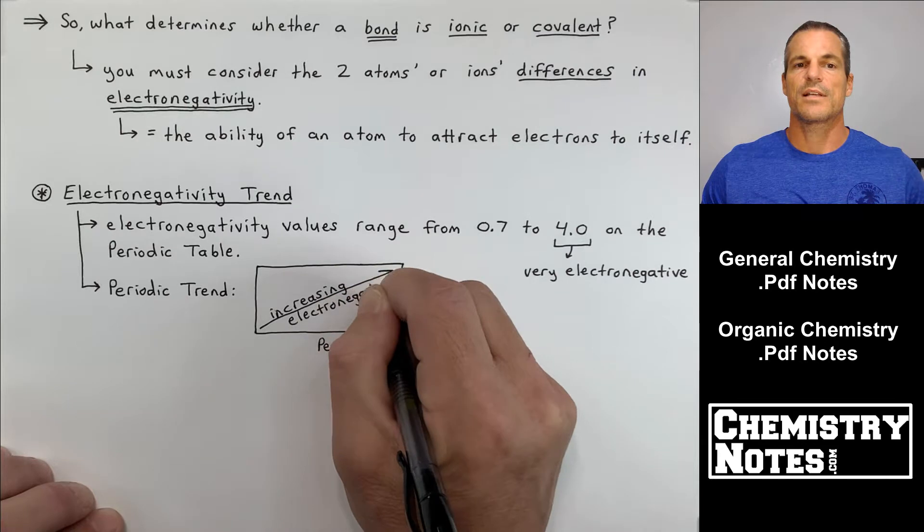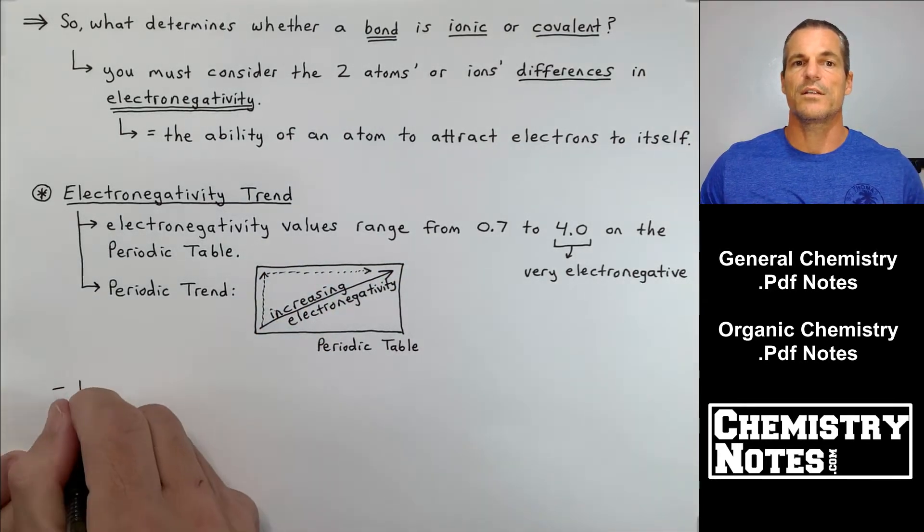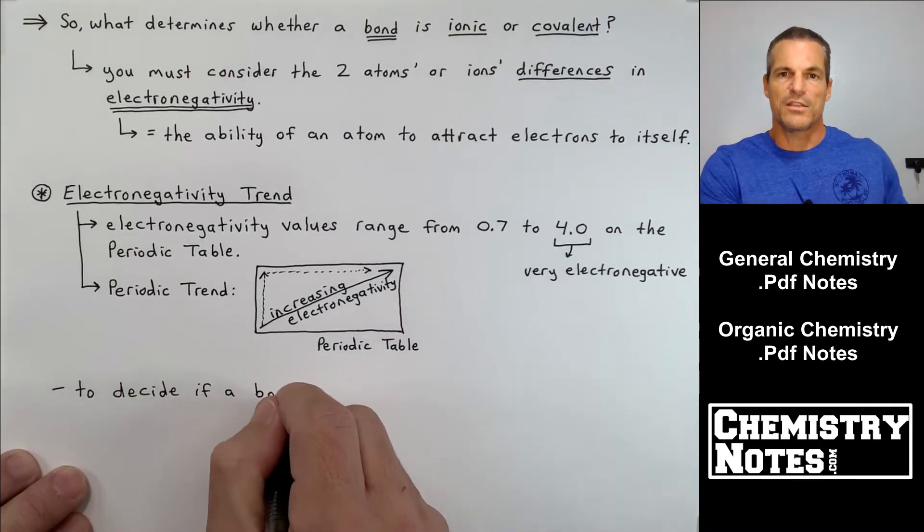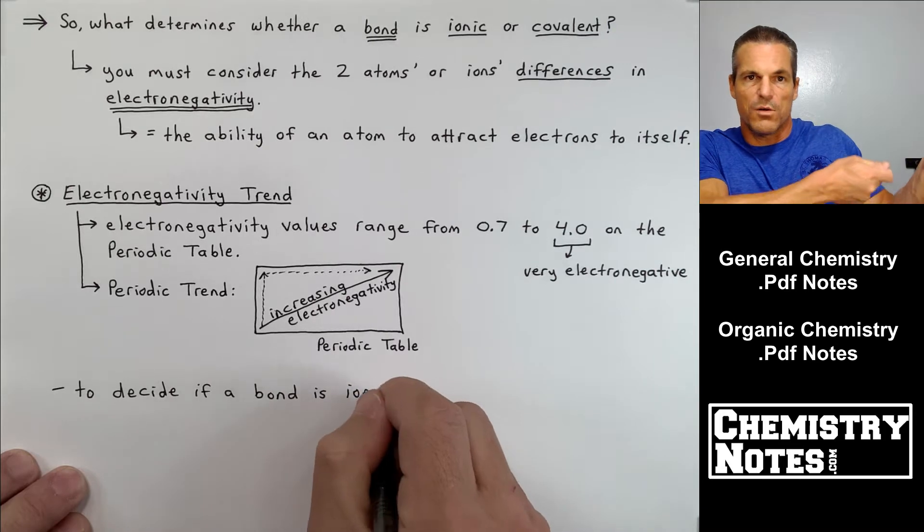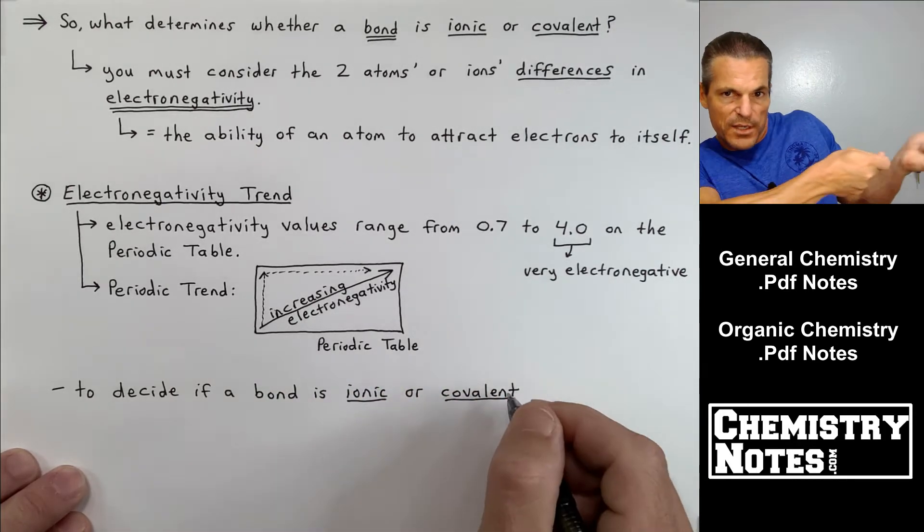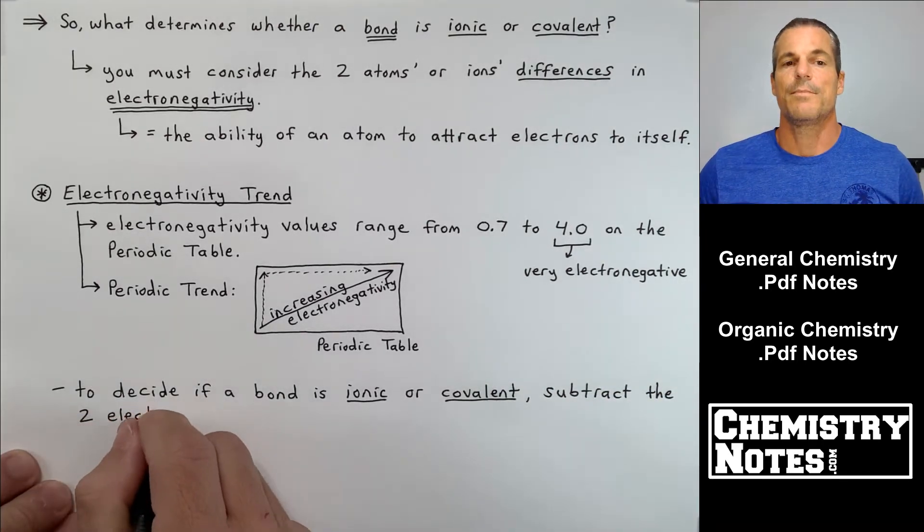I'm going to draw a little periodic table here and show you that the general trend is that electronegativity increases from bottom left to top right. So that means the guys at the top right, things like fluorine and chlorine, these guys are very good at attracting electrons to themselves.